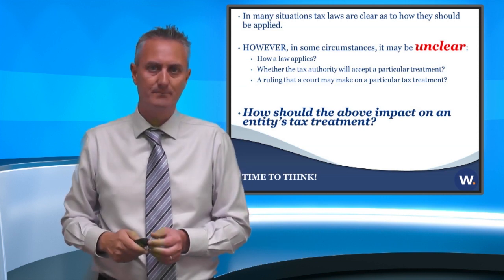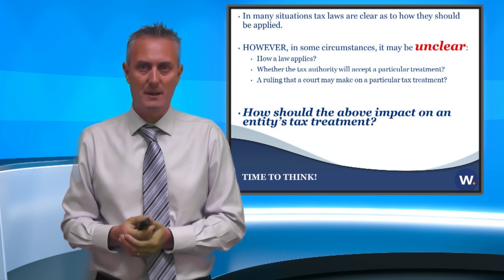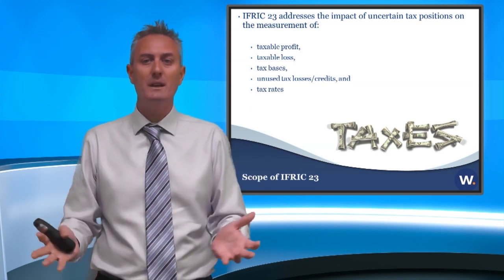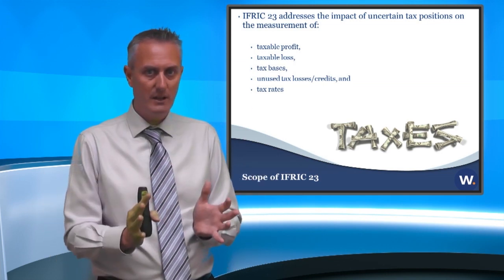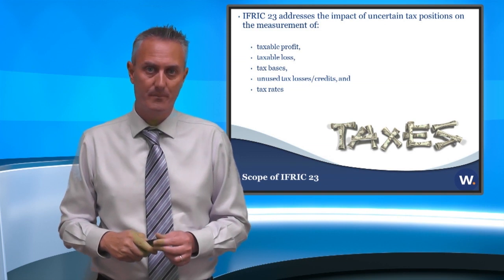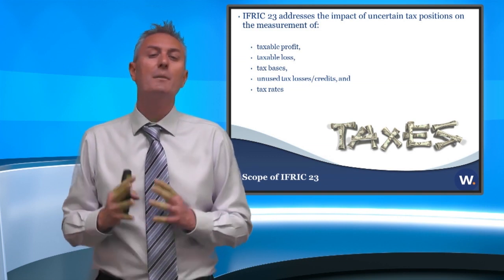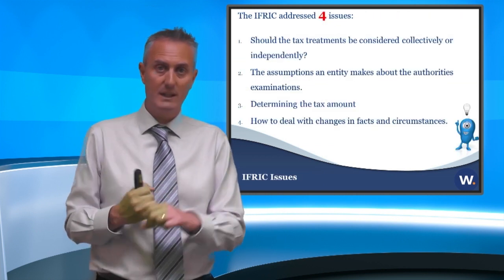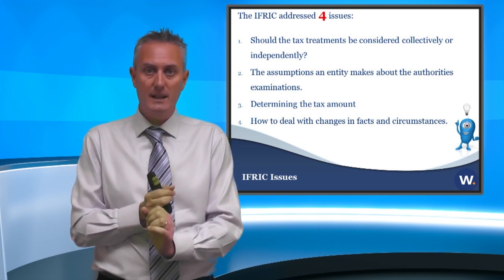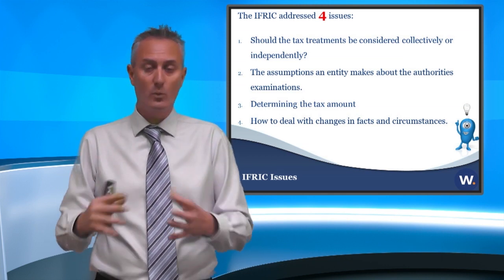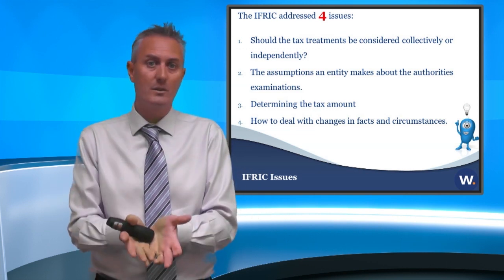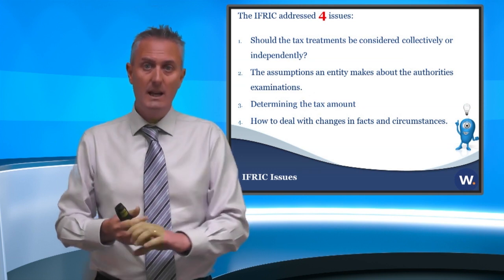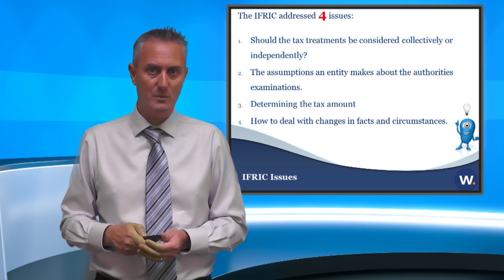How does that tie in with what we're looking at today? There are various taxes companies pay — capital gains, normal taxes, transfer duties, VAT, whatever it may be. Any tax that falls within IAS 12 is subject to this interpretation. Now, what exactly did the IFRIC look at? There are a number of things. Firstly, what is our unit of account — are we looking at individual or group taxes? Secondly, what are the assumptions you would use when the tax authority is examining the tax structure? Thirdly, how do you determine the tax amount? And lastly, what if there's any change in facts and circumstances?